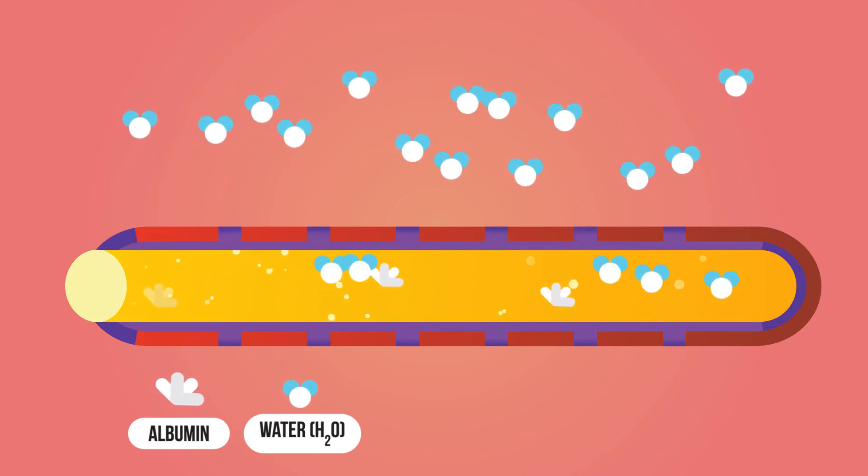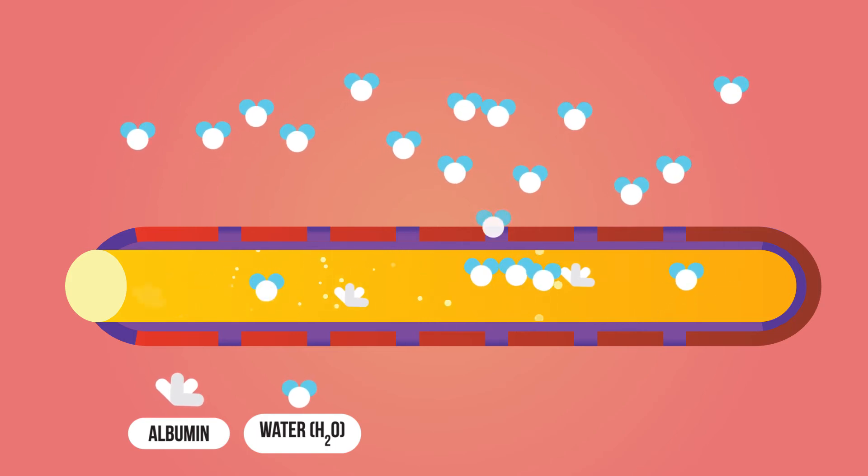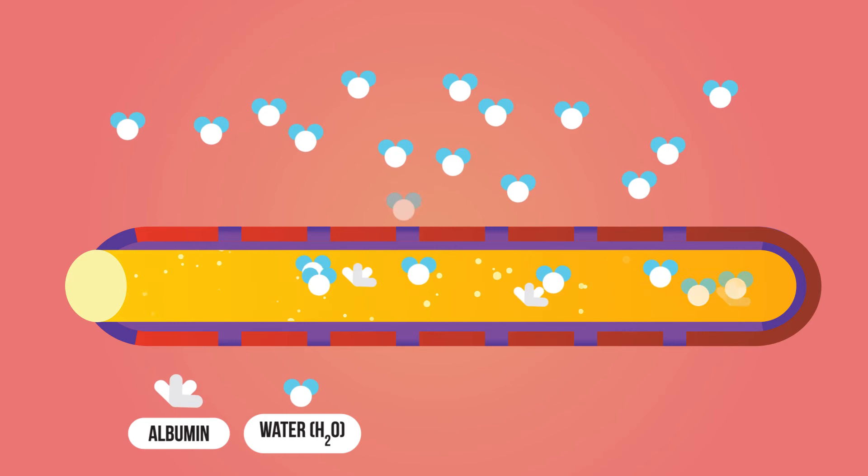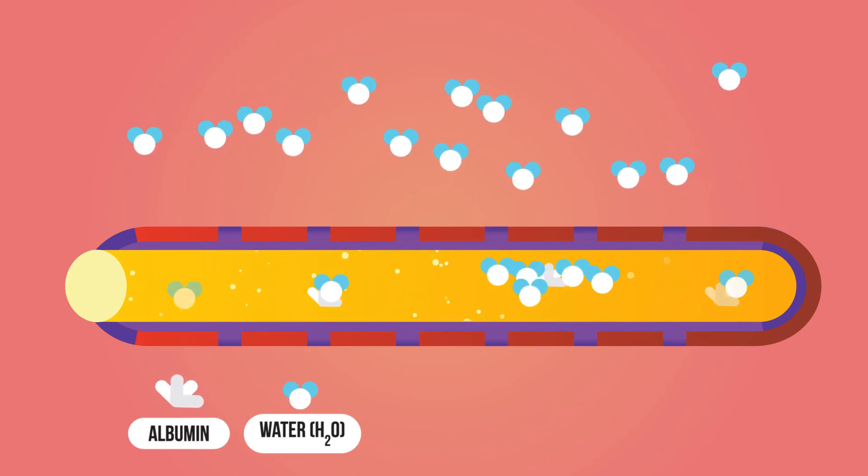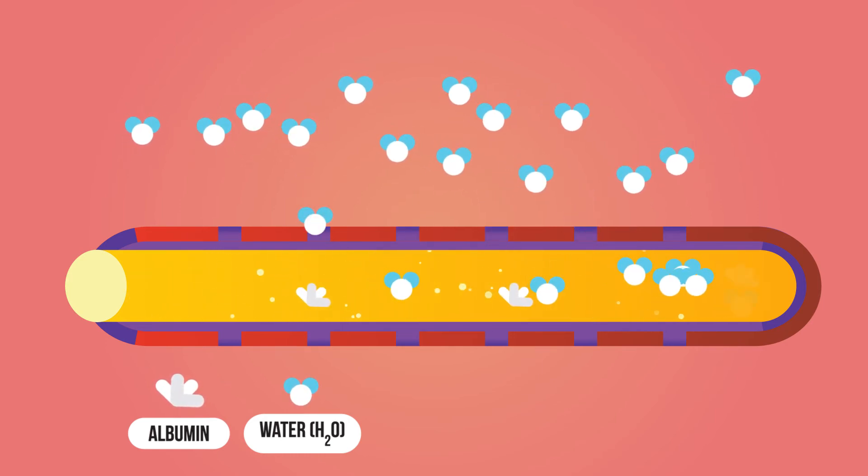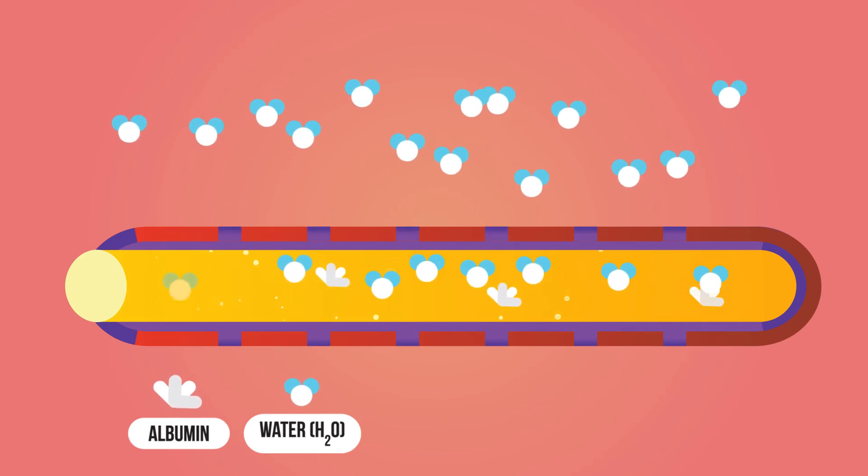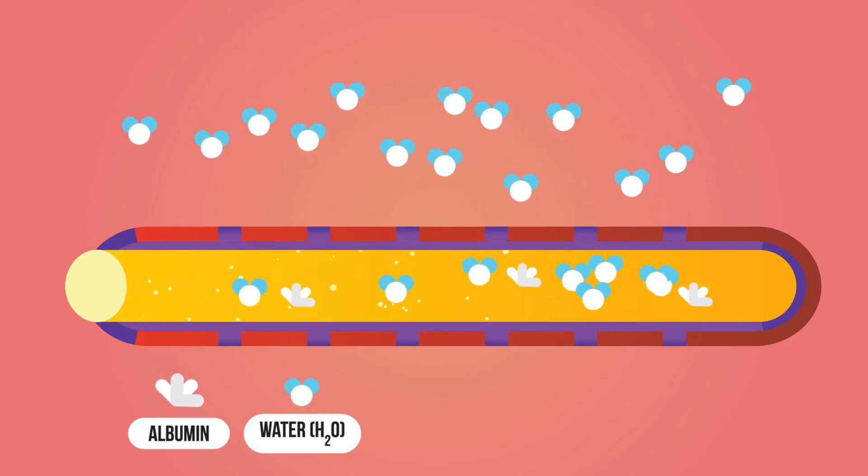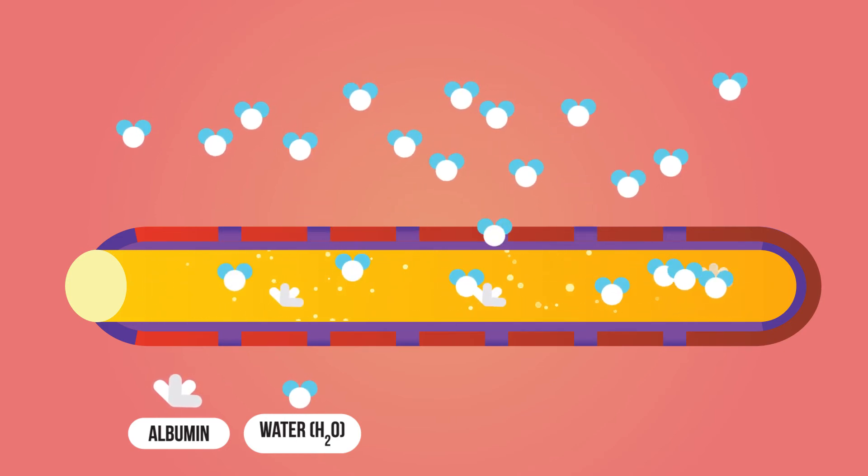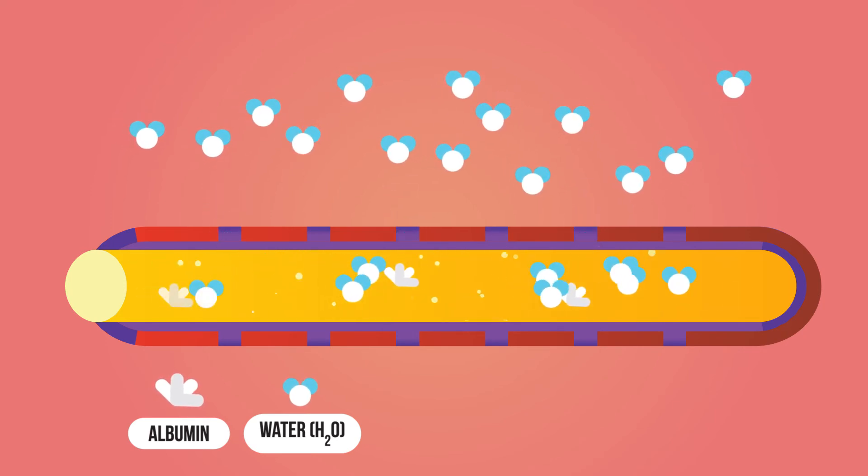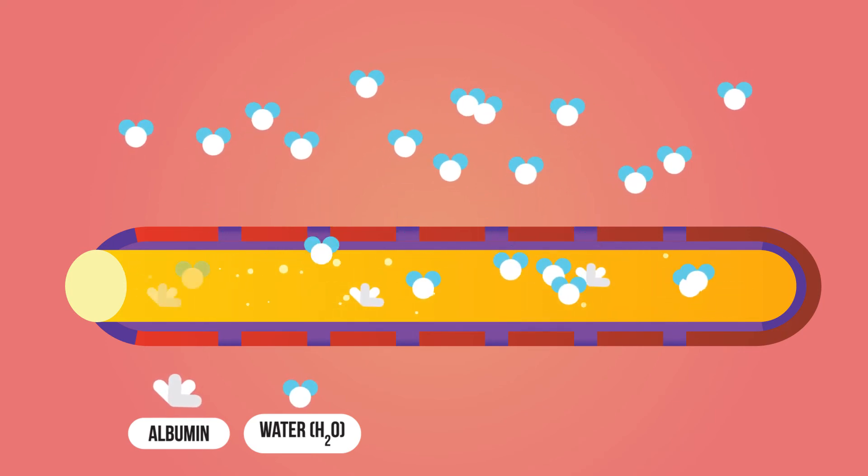The albumin in the blood plasma means there is a higher water concentration in the fluid in the surrounding tissues than there is in the blood. This means water is pulled back into the blood from the tissues by osmosis, water moving down its concentration gradient. We say that the albumin maintains the osmotic pressure of the blood.